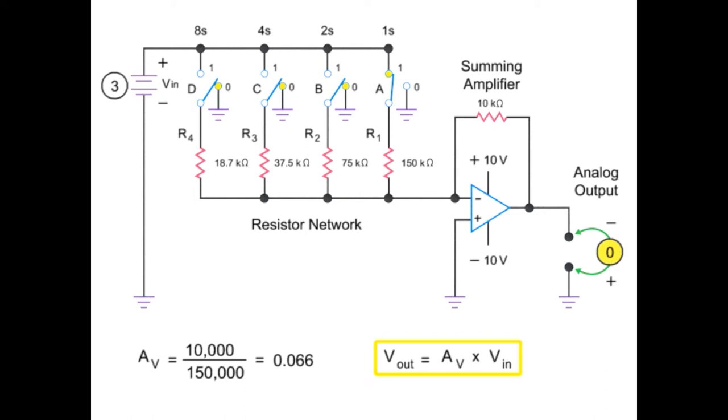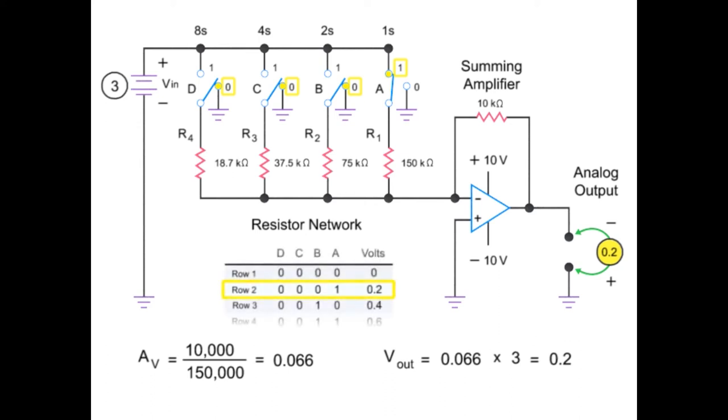Now, the output voltage can be calculated by multiplying the gain by the input voltage of 3 volts. Thus, the product of the amplifier gain of 0.066 and 3 volts is 0.2 volts. Thus, a binary input of 0.001 yields an output of 0.2 volts in accordance with the truth table described previously.